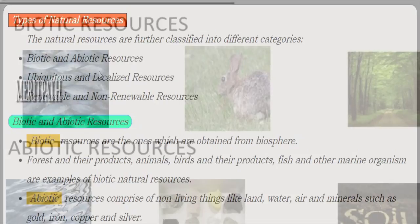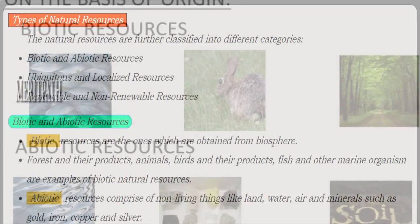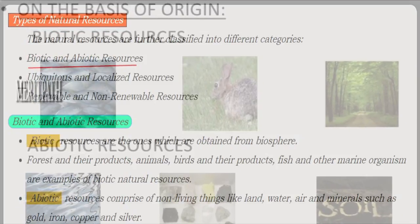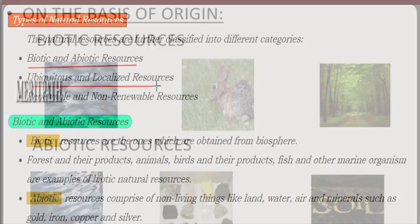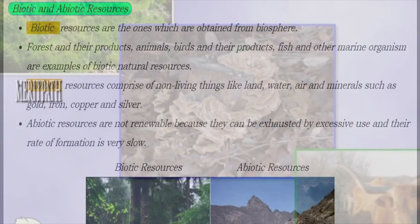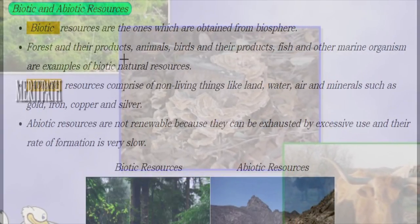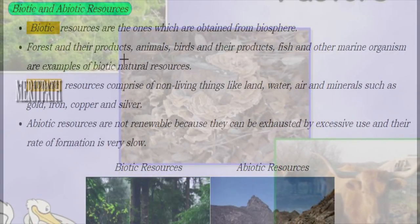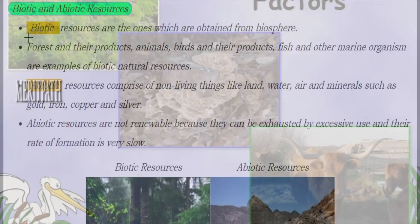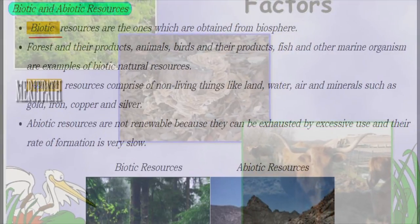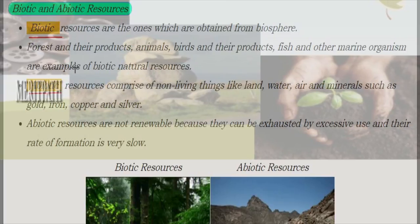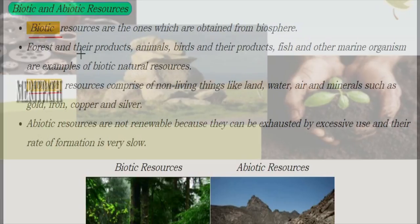The types of natural resources are: biotic and abiotic resources, ubiquitous and localized resources, and renewable and non-renewable resources. Biotic and abiotic are divided on the basis of origin. Biotic means relating to living things, and abiotic means relating to non-living things — the single letter 'a' defines the difference between them.